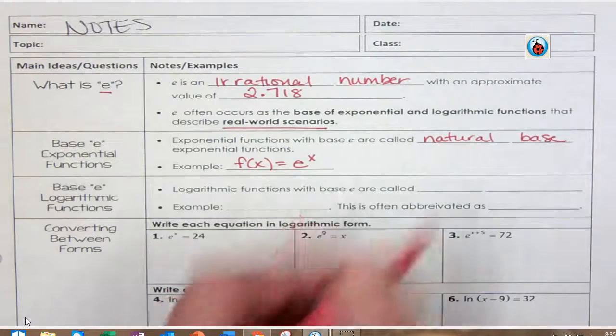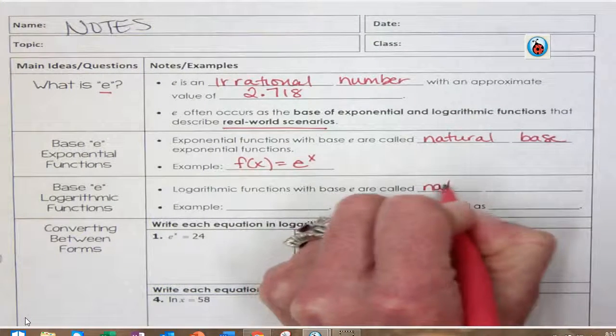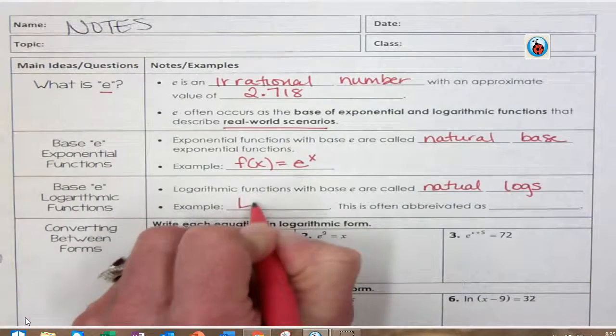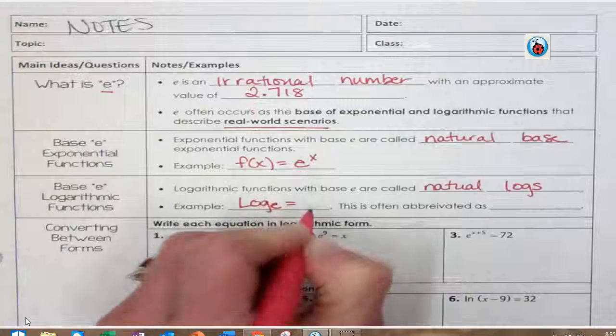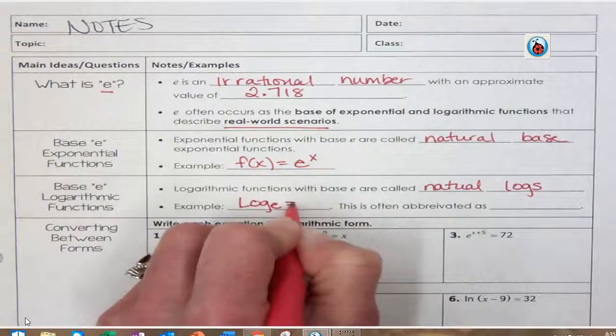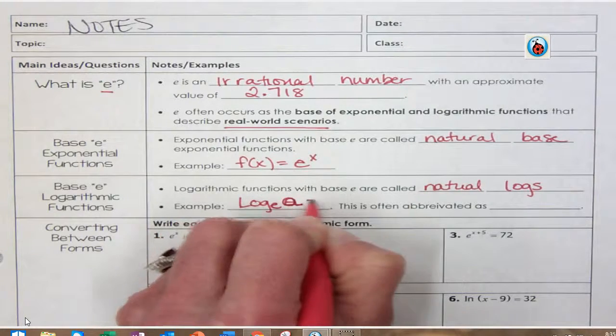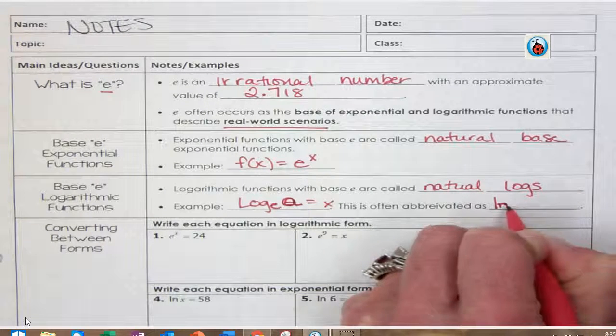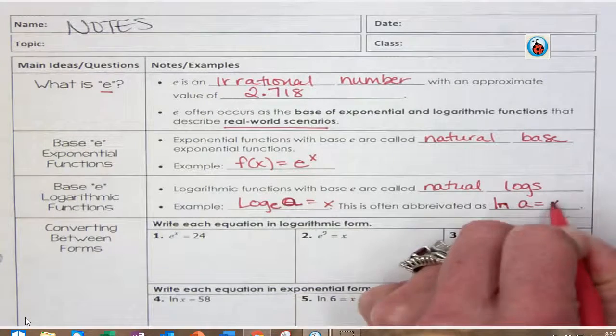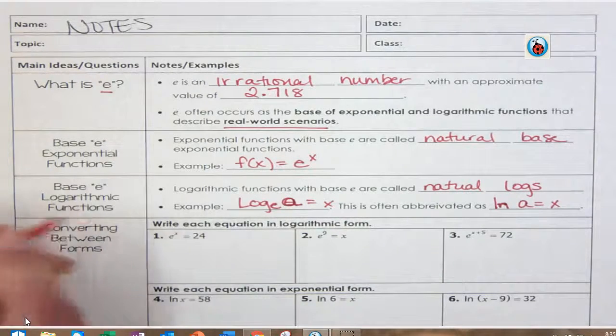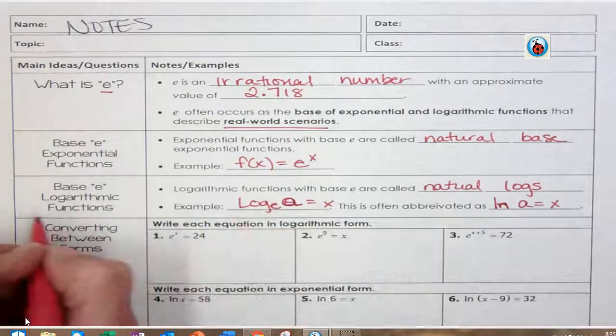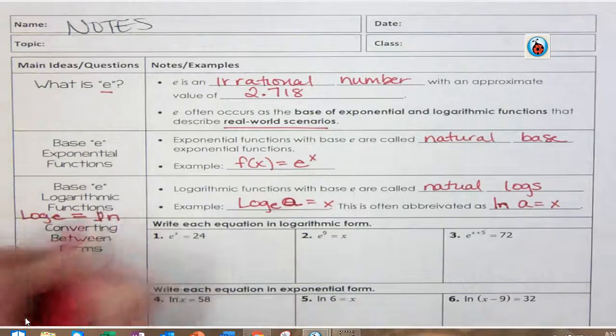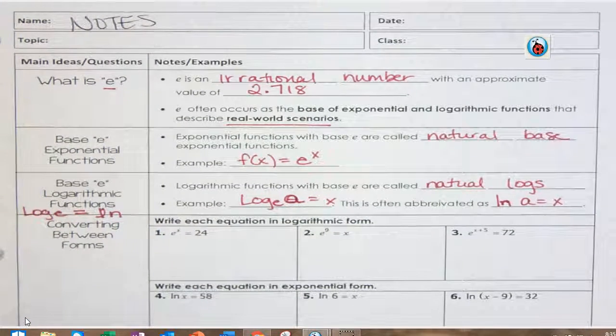Now logarithmic functions with a base of E are called natural logs. An example would be log base E of A. Let's say log base E of A equals X, and that could be abbreviated as ln A equals X. So basically log base E is written as ln. That's an L. Okay, so that's just fancy language.